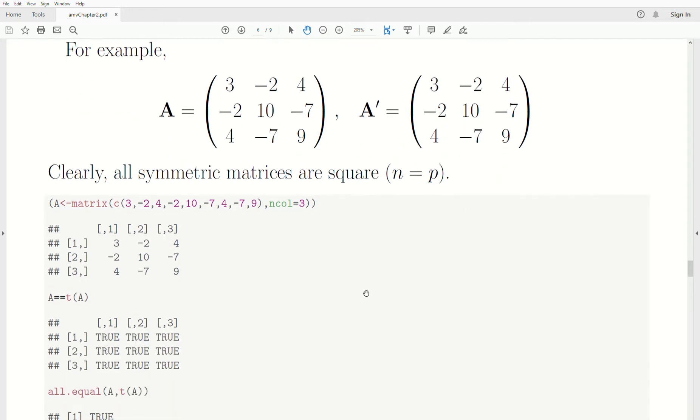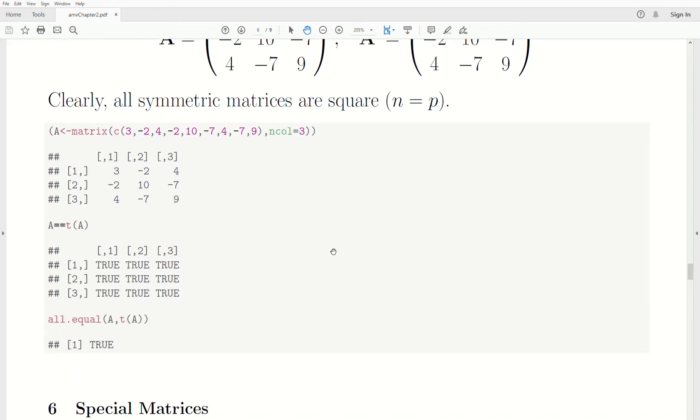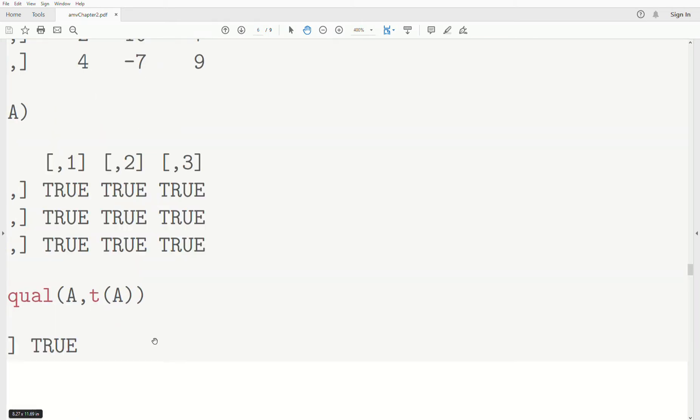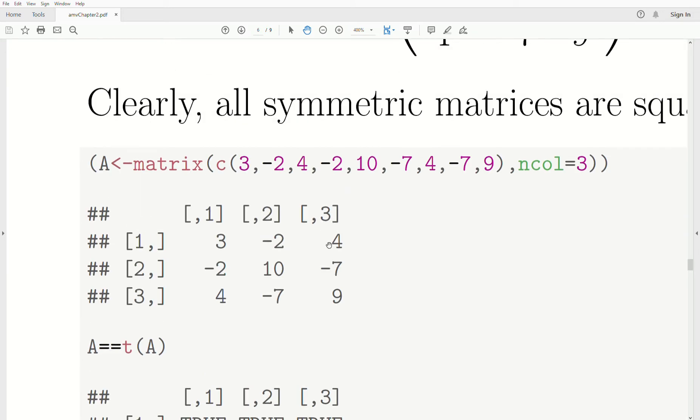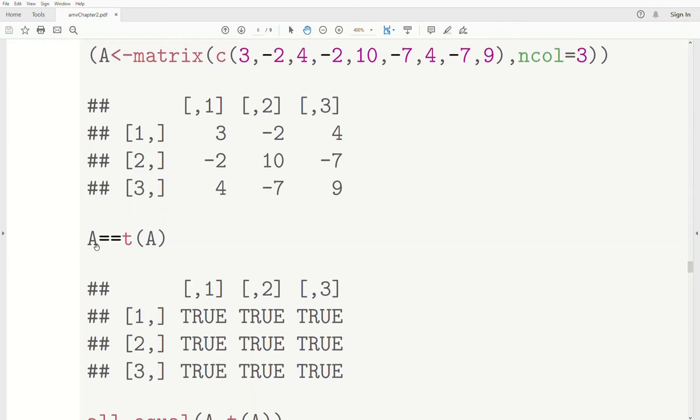So only square matrices can be symmetric. So here, if we look at the R code, we enter a matrix into A, and it's a three by three matrix. And we say, is A equal to the transpose of A? And notice it goes through and compares each element, and they're all true. So A is a symmetric matrix.